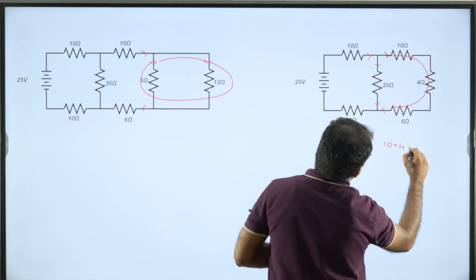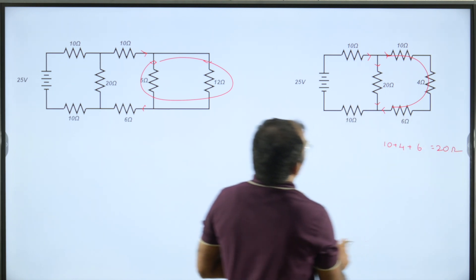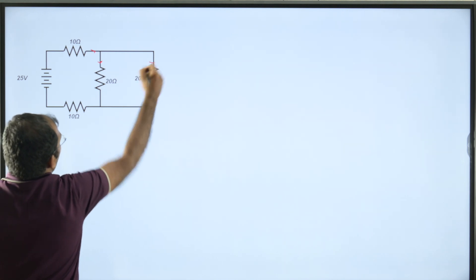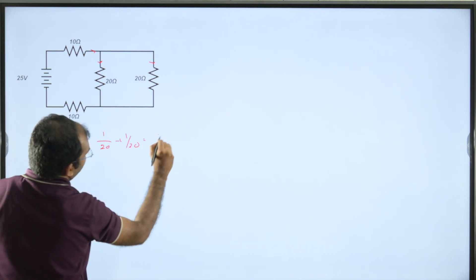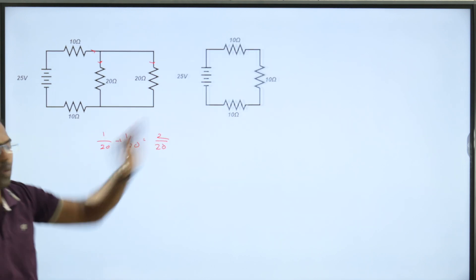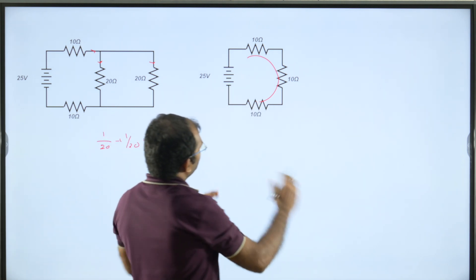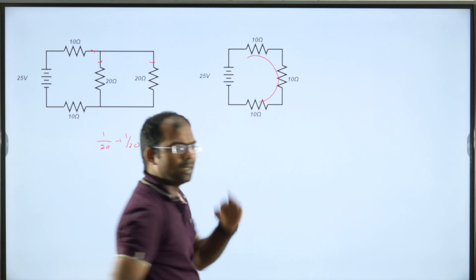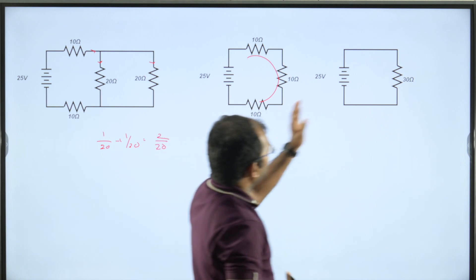The series gives 10 plus 4 plus 6, which equals 20 ohms. We will draw the equivalent circuit for that condition. I have got two parallel networks. 1 by 20 plus 1 by 20 equals 2 by 20. Therefore, the equivalent resistance of these two is 10 ohms. This network is in series, so 10 plus 10 plus 10 is 30 ohms. Therefore, the equivalent resistance equals 30 ohms.